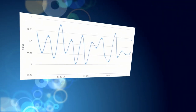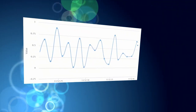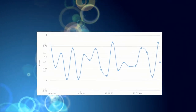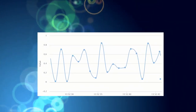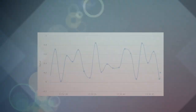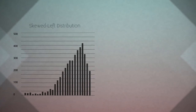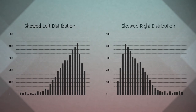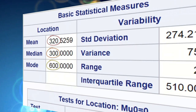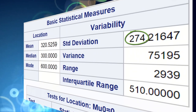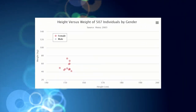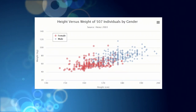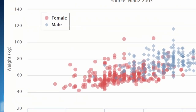So far in our discussions of graphing, we've considered data obtained from one variable, either categorical or quantitative, and we've learned how to describe the distribution of that single variable using the appropriate visual displays, as well as numerical measures of center and spread. Next, we're going to be visualizing our association of interest by exploring the relationship between two variables.